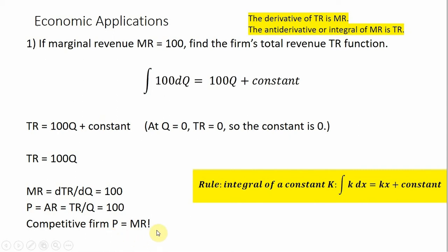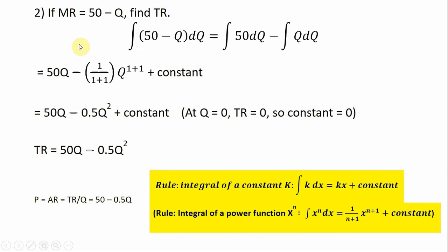Let's do a slightly more complicated example. In this example, a firm has marginal revenue given by 50 minus Q. Here again, we want to find total revenue. Writing this in integral notation, we're going to take the integral of 50 minus Q. We can use the rules of sums and differences to break this down into two functions: we're going to take the integral of 50 and subtract from that the integral of Q.